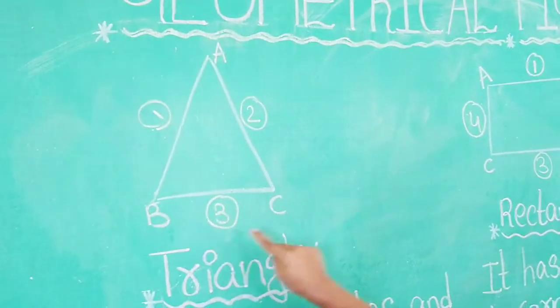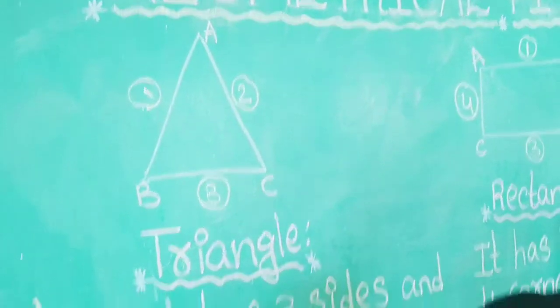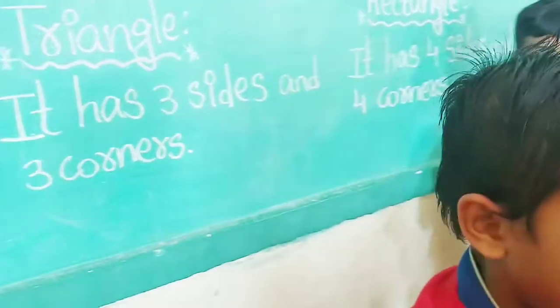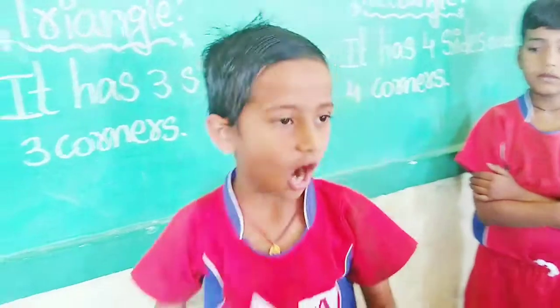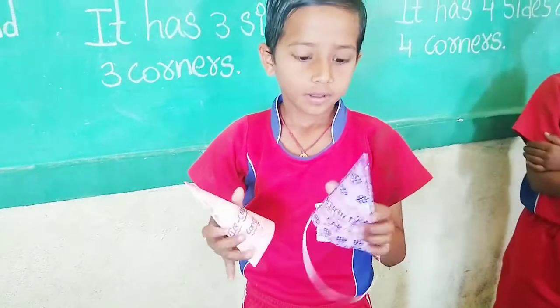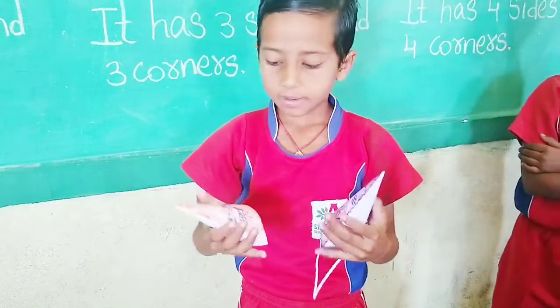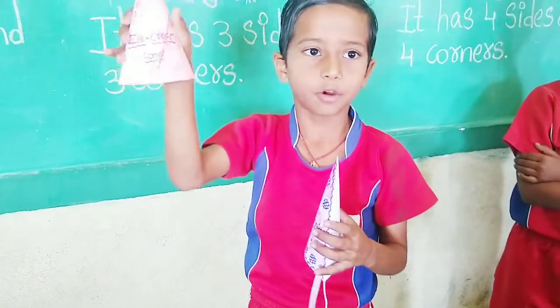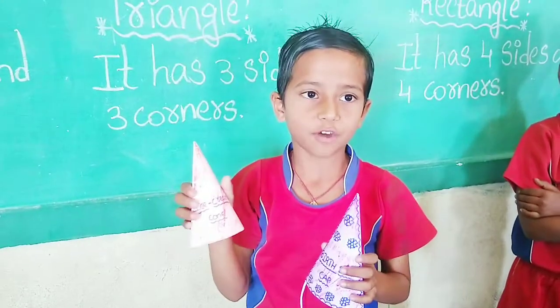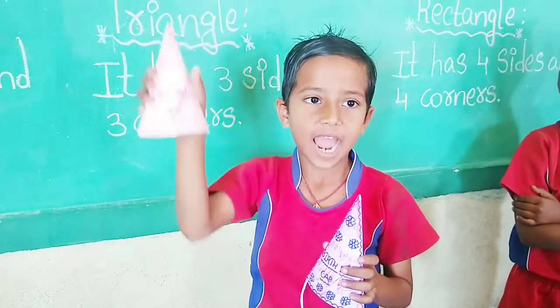Corner A, Corner B, Corner C. Examples of triangle: ice cream cone.